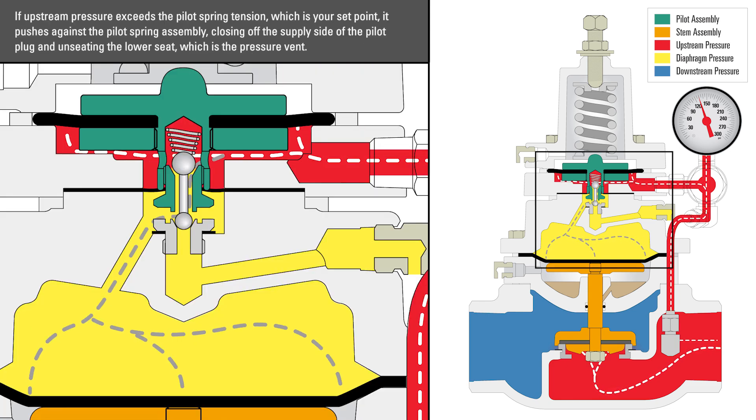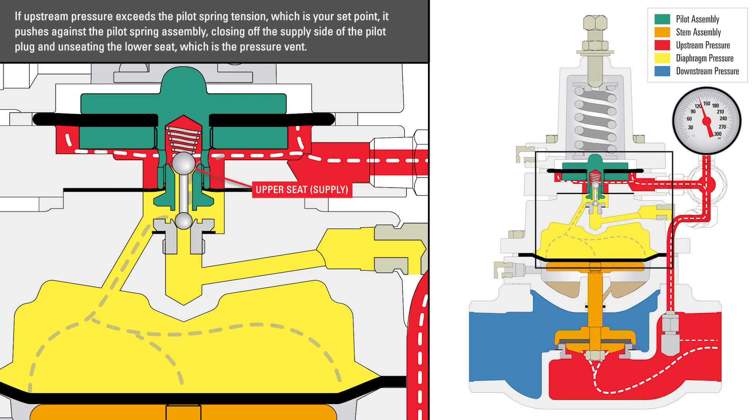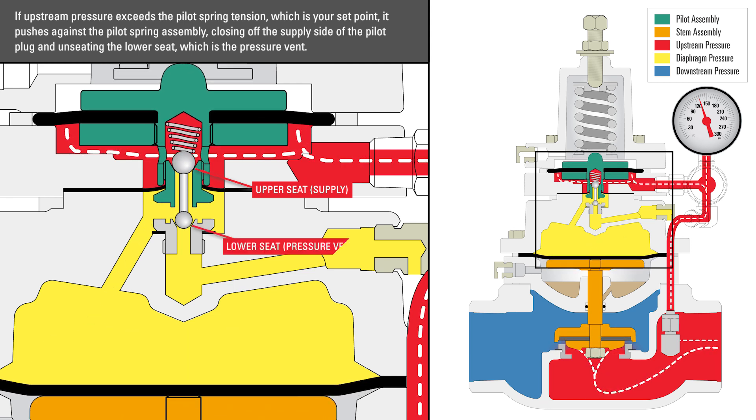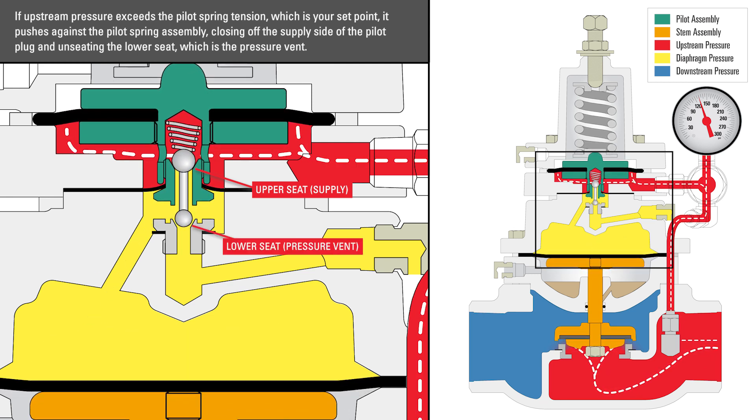If upstream pressure exceeds the pilot spring tension, which is your set point, it pushes against the pilot spring assembly, closing off the supply side of the pilot plug and unseating the lower seat, which is the pressure vent.